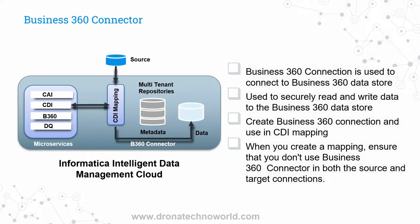On the left-hand side of this diagram we can see various microservices such as CAI, CDI, B360, and DQ — that is Cloud Application Integration, Cloud Data Integration, Business 360, and Data Quality. We can use one of these microservices, for example CDI (Cloud Data Integration), and develop a mapping. In this mapping we can use a connector — for example, if you're going to use the Business 360 connector, you specify the source as an on-premise database and the target as an IDMC data store.